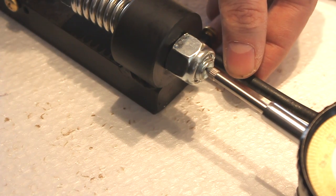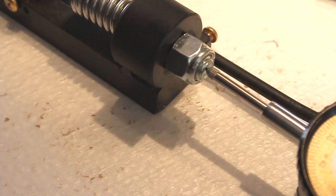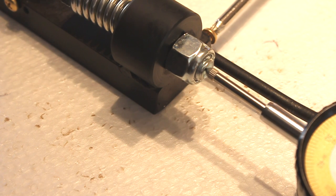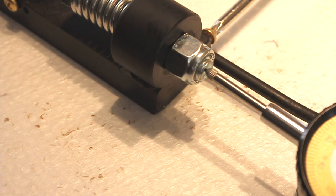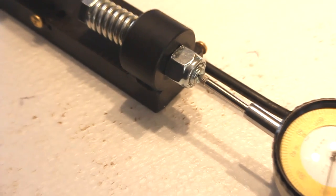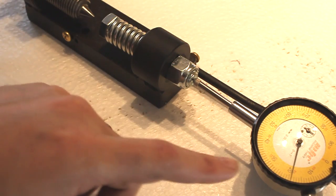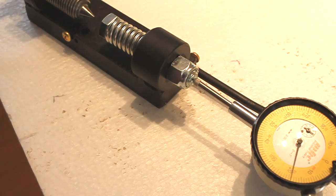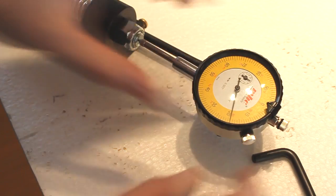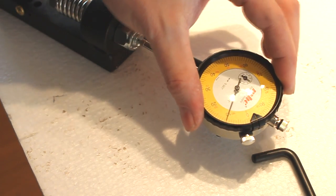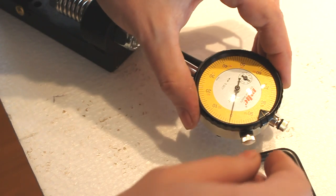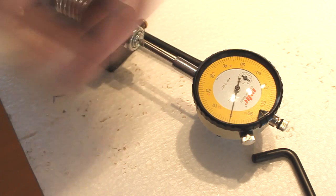Now that I've done that my dial indicator has moved a little bit but you can adjust it by loosening this and turning your zero to where the needle is. So I've got my zero.